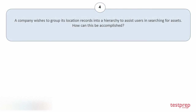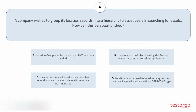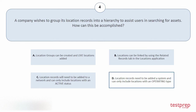Question number 4: A company wishes to group its location records into a hierarchy to assist users in searching for assets. How can this be accomplished? Your options are: a) Location groups can be created and live locations added. b) Locations can be linked by using the Related Records tab in the Locations application. c) Location records will need to be added to a network and can only include locations with an active status. d) Location records need to be added to a system and can only include locations with an operating type. The correct answer is option d.